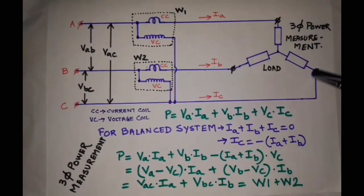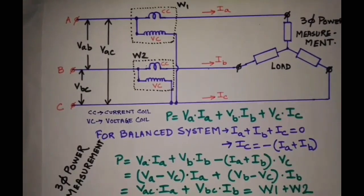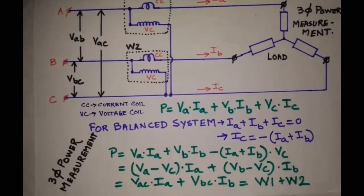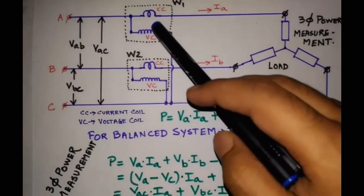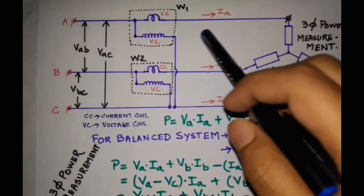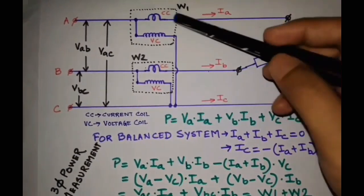So summing up these two wattmeter readings, you can measure the three-phase power. This is a very simple method to measure three-phase power by two wattmeter method. In modern three-phase wattmeters, they use the same principle. They generate the deflection torque by the resultant of these two.